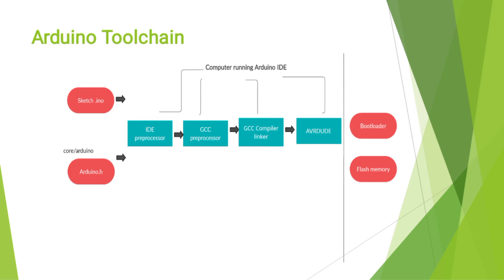This is the diagram that represents the Arduino toolchain. We give the input as your program file name, that is sketch.ino — .ino is the file extension of your Arduino program. Then Arduino IDE preprocessor, then GCC preprocessor, then Compiler Linker, then AVRDUDE — these are all for the computer running Arduino IDE. Then bootloader, then flash memory.